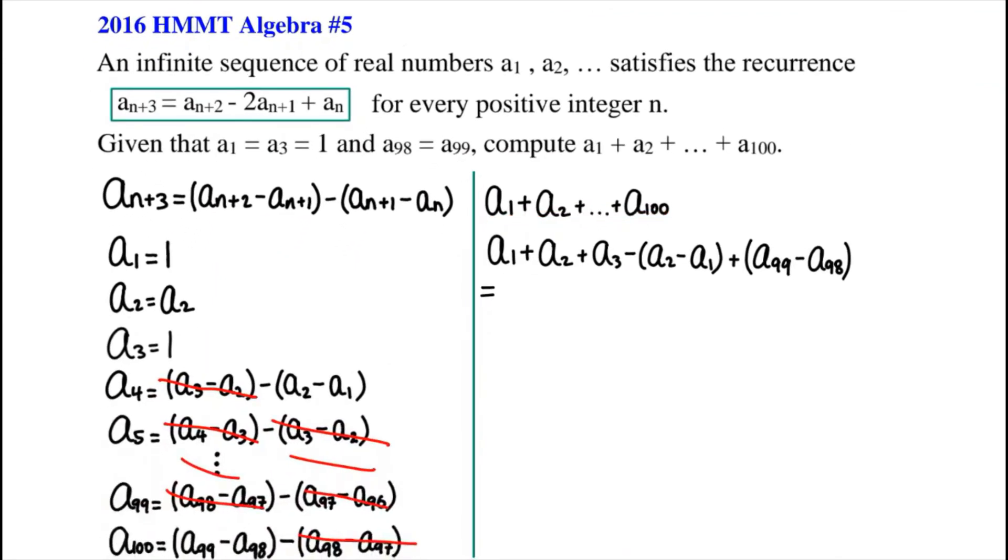Now, now we get that a1 plus a2 plus a all the way to a100 which we have to solve, remember? So now we get this over here, what we just did over on the left side. So let's just put the values of a1 and a3 in here, shall we? a1 equals, well, 1 plus a2 because we don't really know anything about it, plus 1 minus a2 minus 1 plus a99 minus a98.